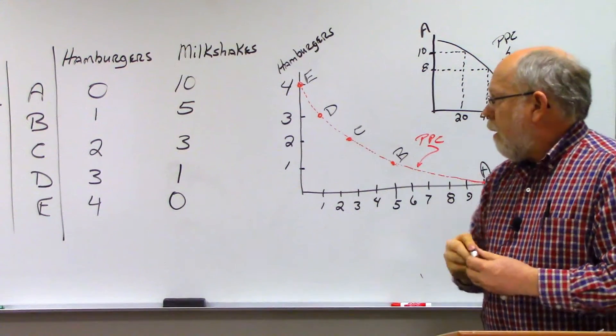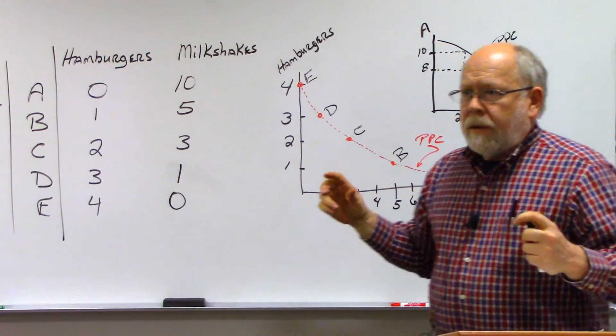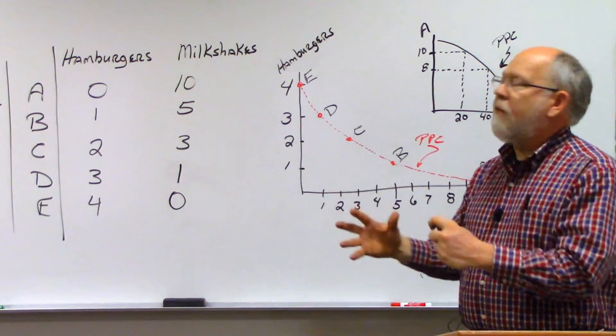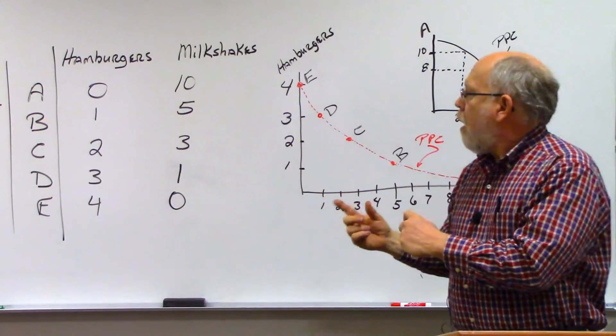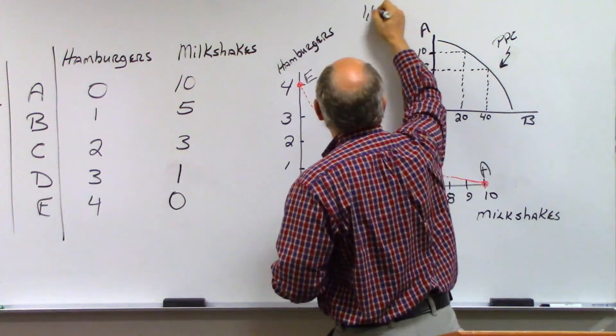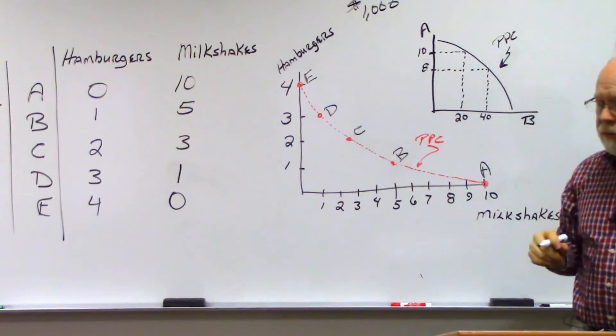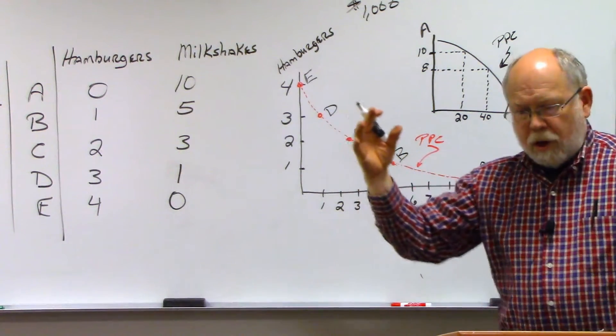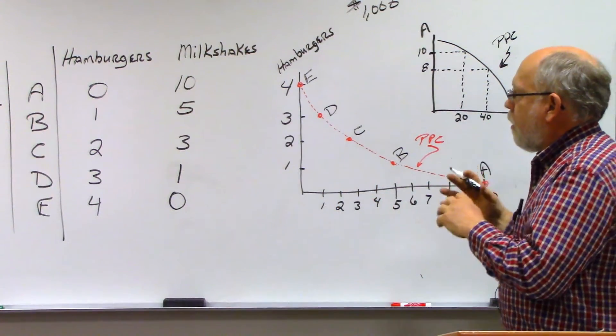So let's throw some numbers on this. Let's say that it's about the same cost, and we make the same price, and the same profit margin if we produce a unit of hamburger as we produce a unit of milkshake. And let's just arbitrarily say a nice round number of $1,000. We can earn $1,000 if we produce a unit of milkshake, or we can make $1,000 if we produce a unit of hamburgers.